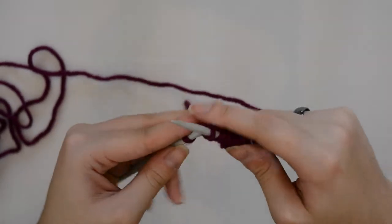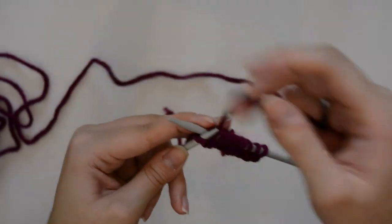Just knit all stitches on the first row. This is your right side row.